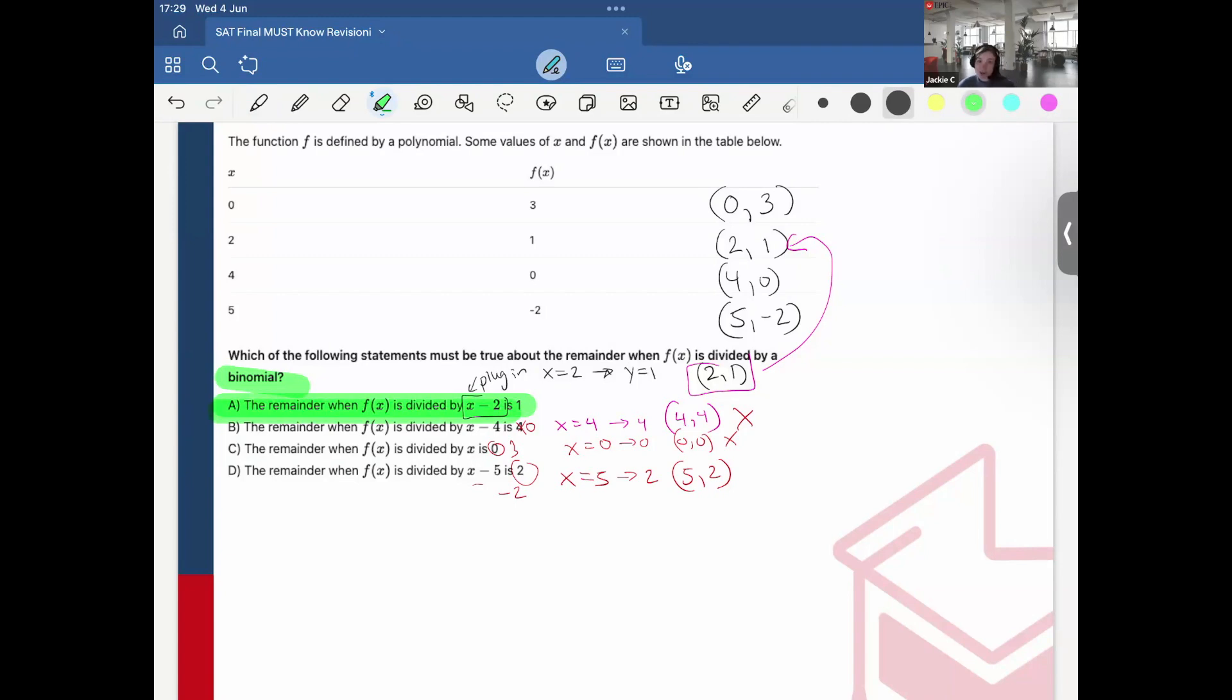Okay, so I hope you have the remainder theorem down. It does come up. It could make the difference between a 790 or 800 score if you know this amazing trick and theory. Okay, so like, rate, subscribe. If you like the video, share with your friends, tell everyone about me, because the more people we help, the better the world can be. Okay, thanks guys for watching and for being amazing supporters. I'll see you in the next video. Bye.